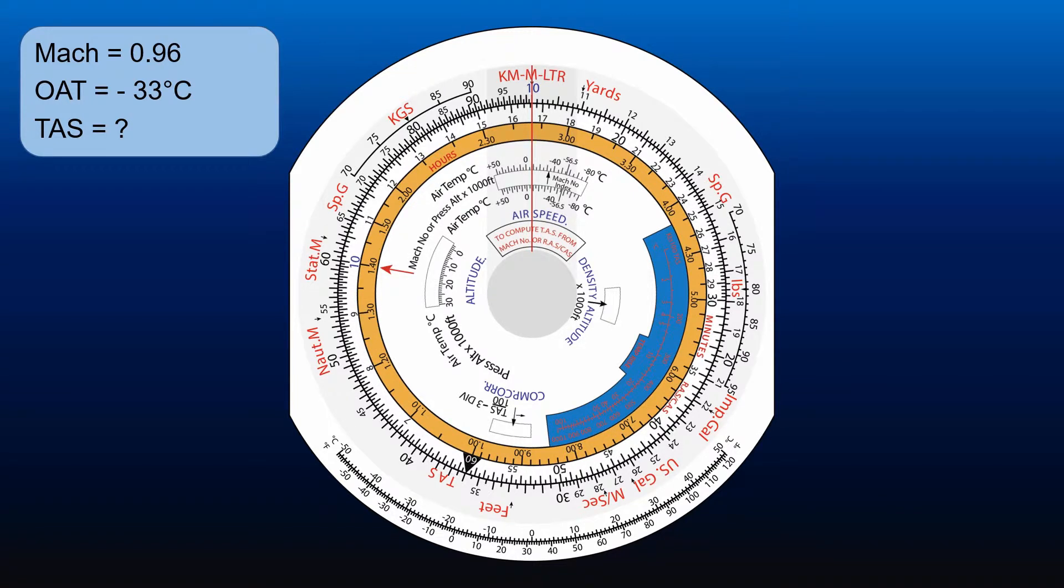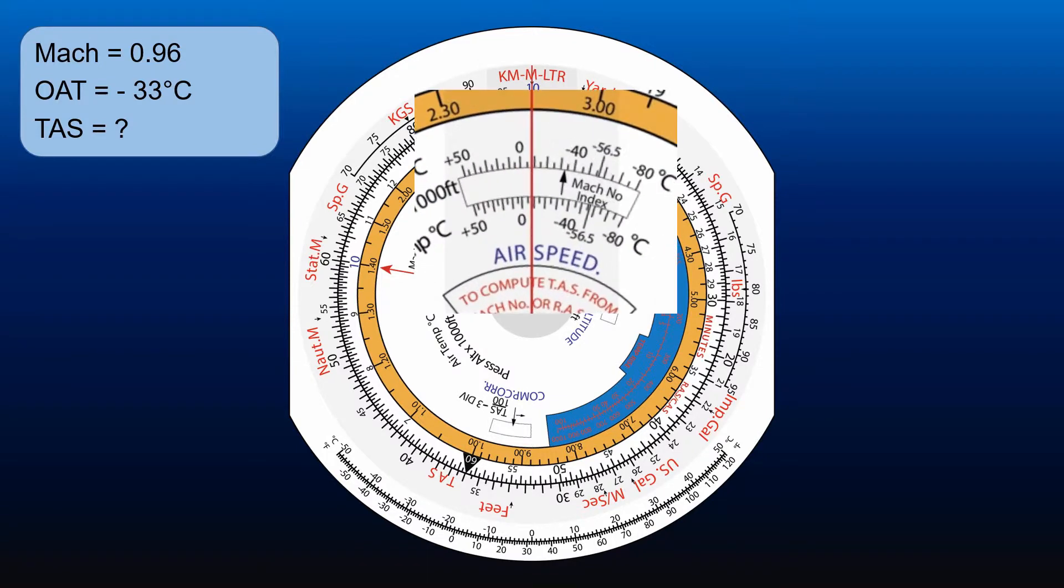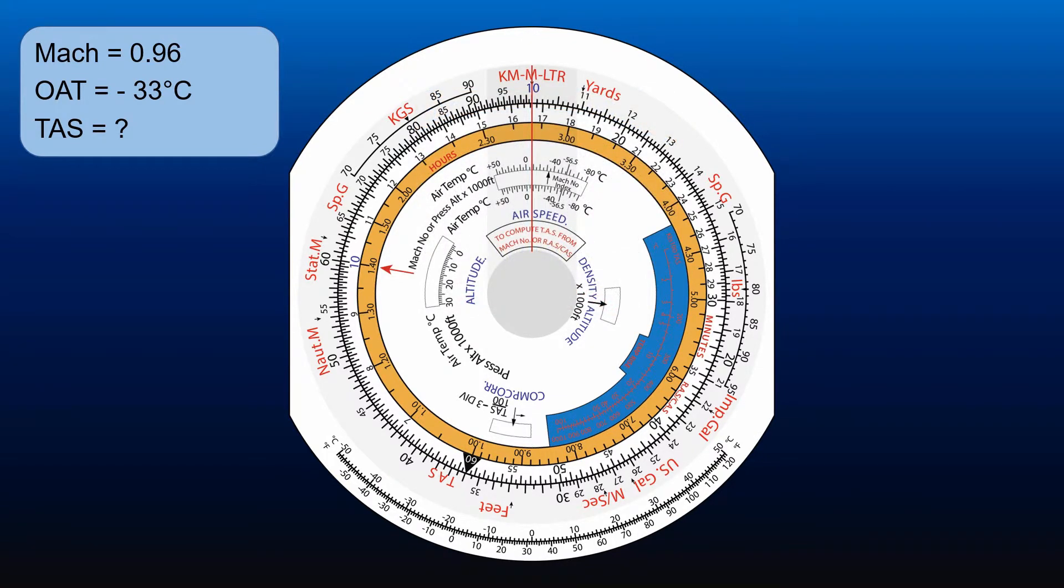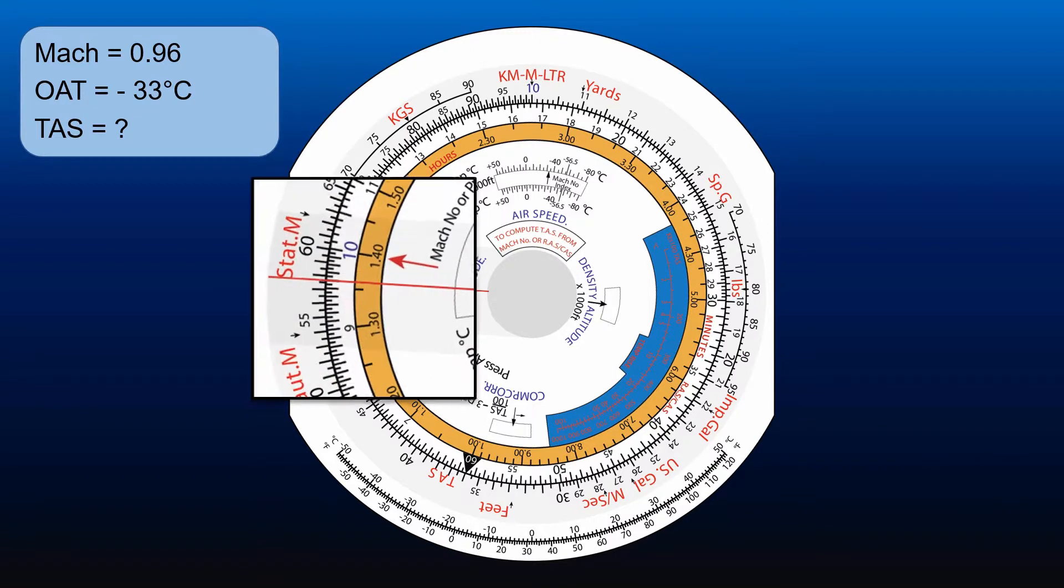Inside the airspeed window, align the Mach number index with minus 33. Align the cursor with 9.6 on the inner scale and read off the true airspeed: 576 knots.